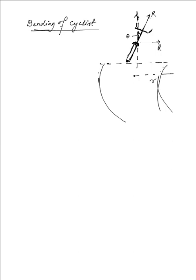One component is R sinθ and the other is R cosθ. R cosθ is balanced by the combined weight of the person and cycle, while R sinθ contributes to the centripetal force acting towards the center. Let the person cycle with speed V, so R sinθ = MV²/R, where R is the radius.